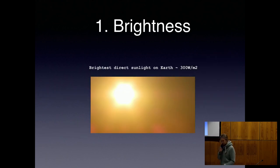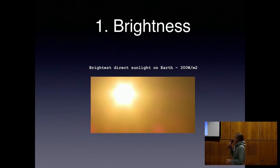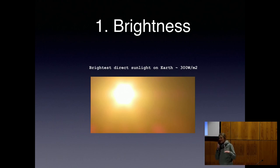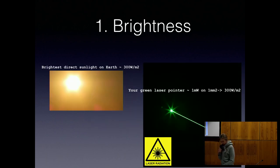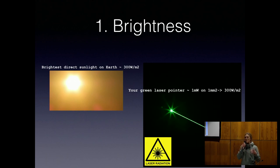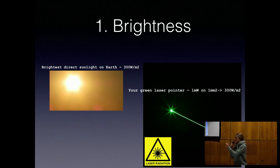Basically, brightness is density of energy in time and in space. The brightest direct sunlight on Earth gives you 300 watts per square meter — that's at the equator on a completely clear day. And if you look at your green laser pointer in your pocket, then it's the same brightness. Of course, there's a lot more energy coming from the sun, but the brightness — the amount of energy per second per square centimeter — is the same on your laser pointer as it is from the sun.